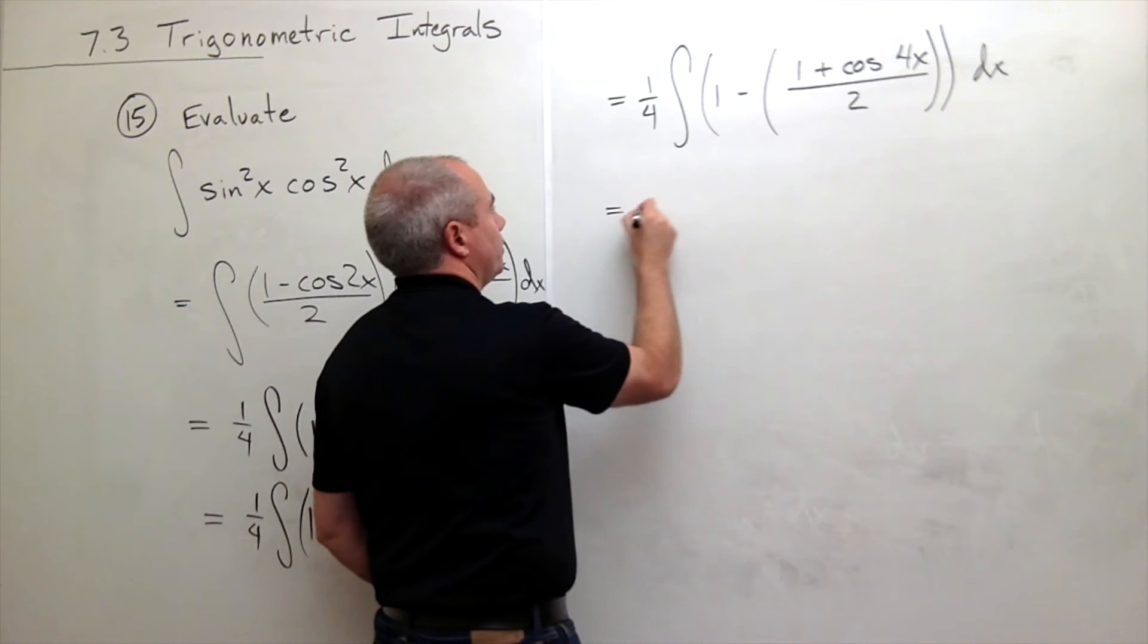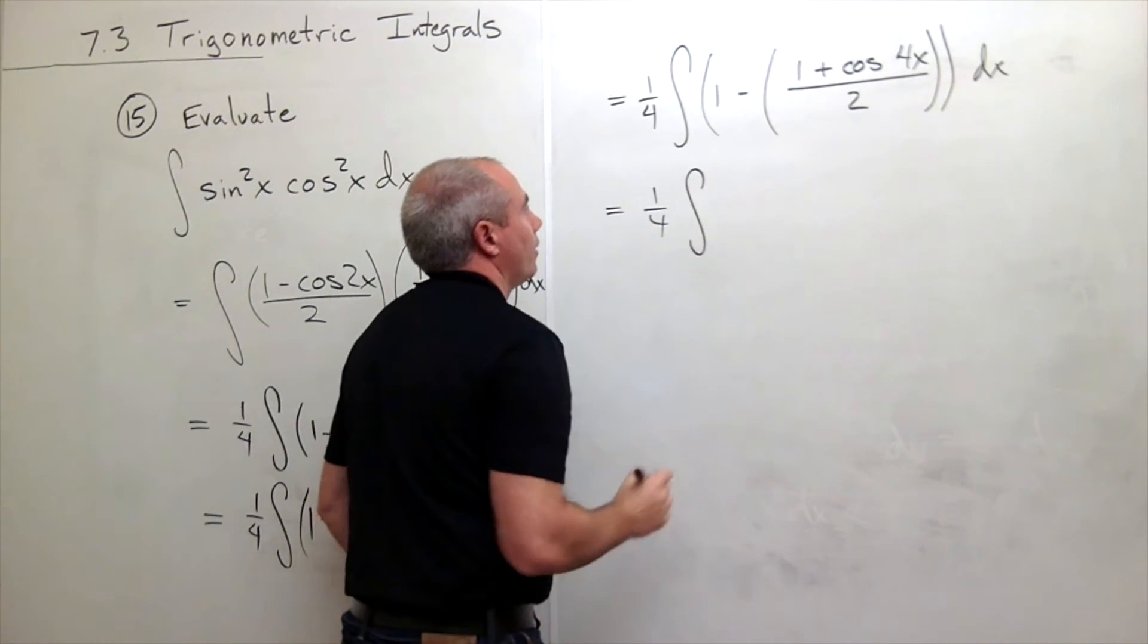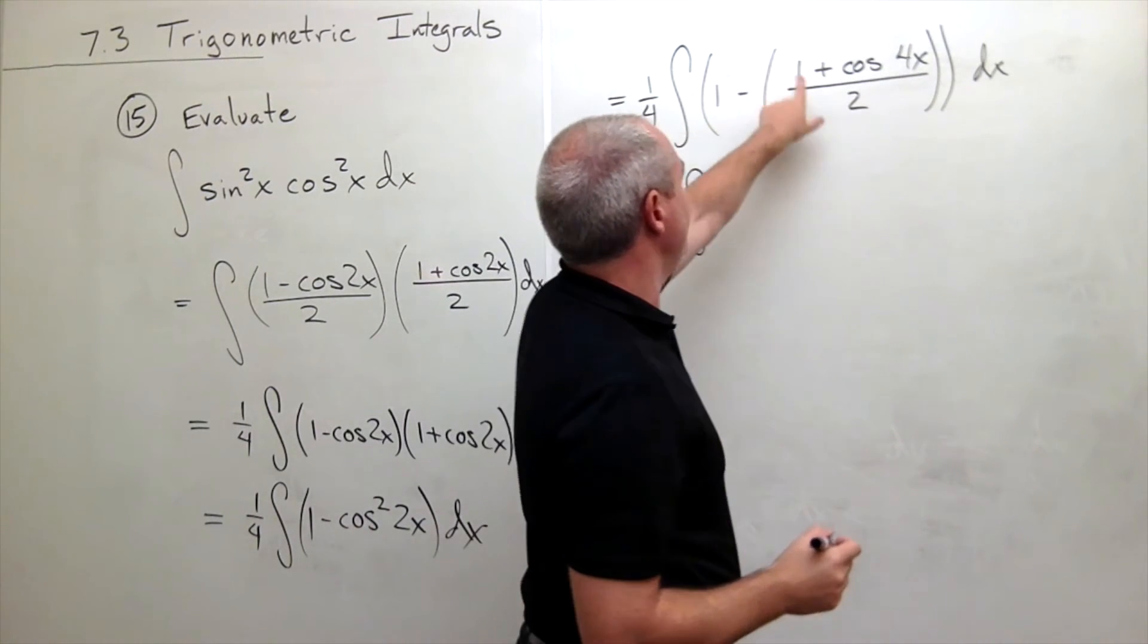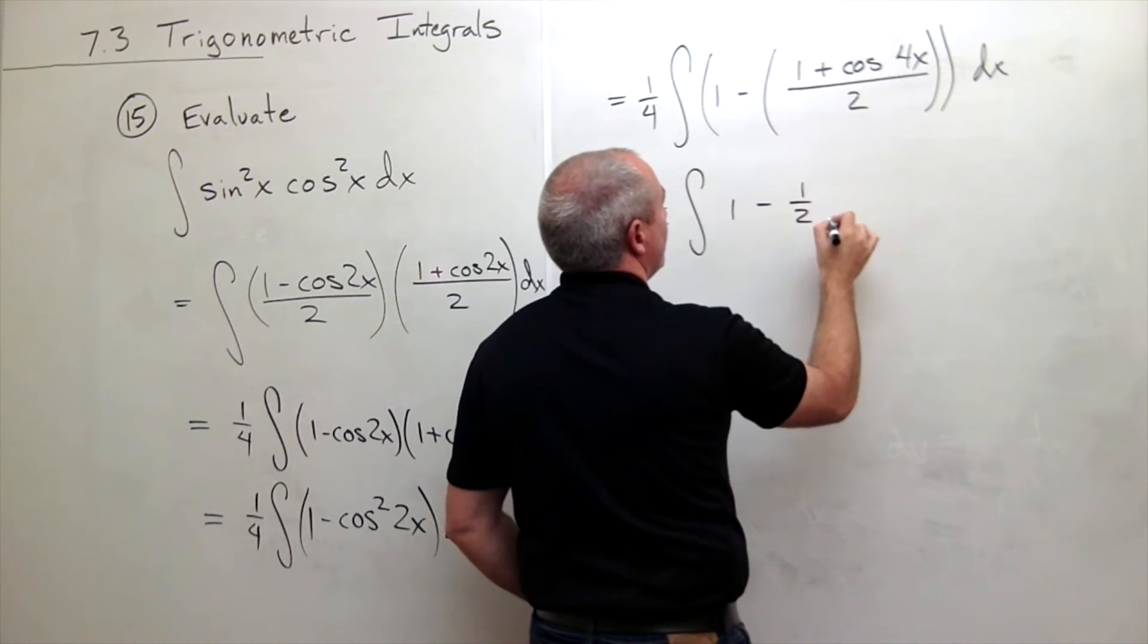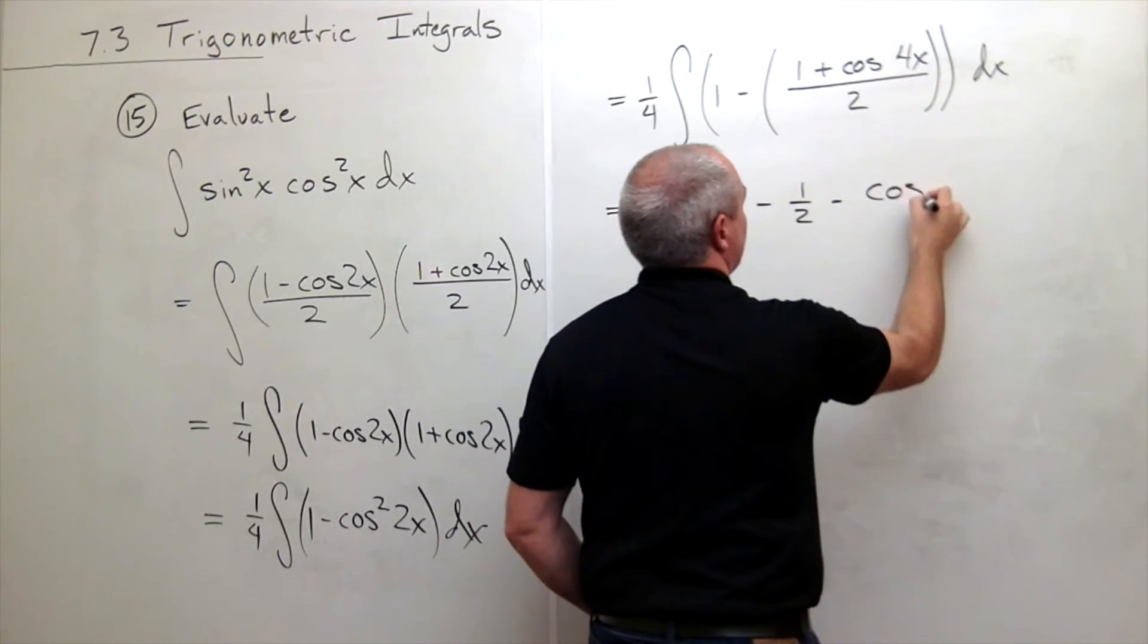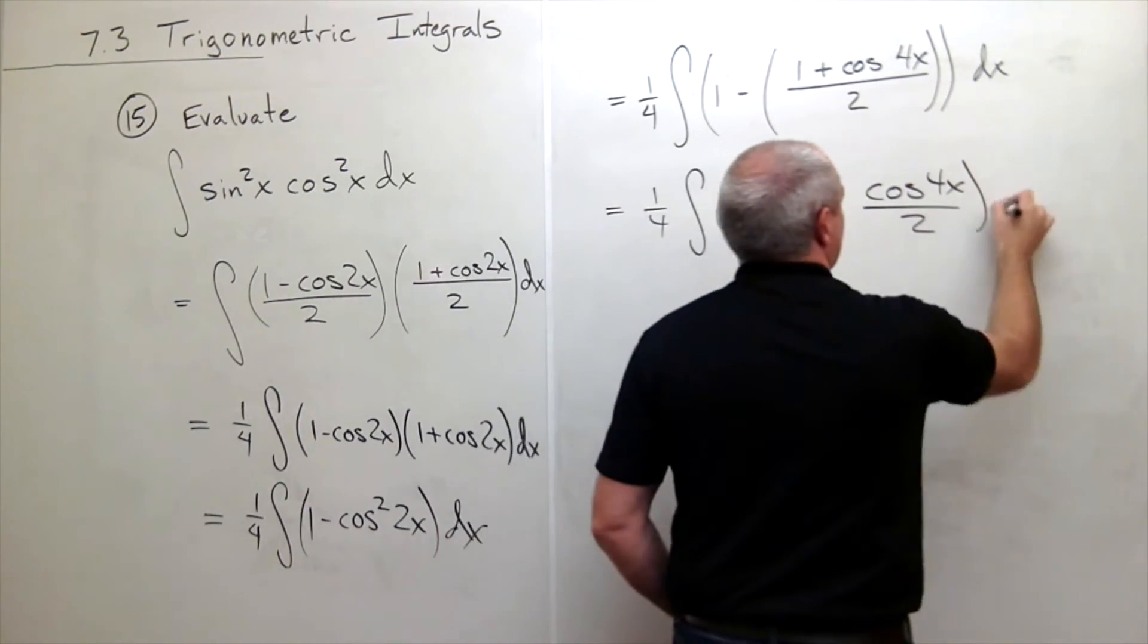Let me simplify that just a little bit. I get a 1 fourth integral of, if I split this into two fractions, I get 1 minus 1 half minus cosine of 4x over 2 dx.